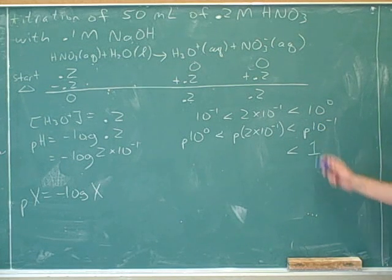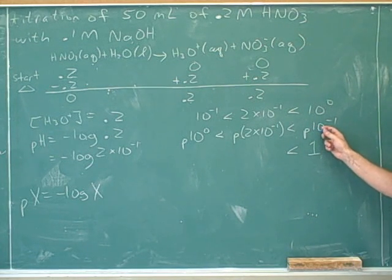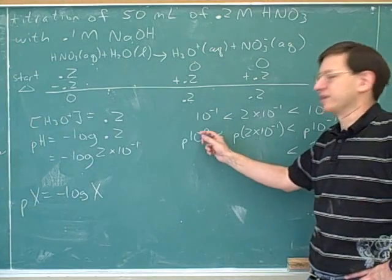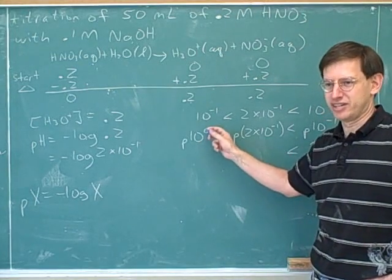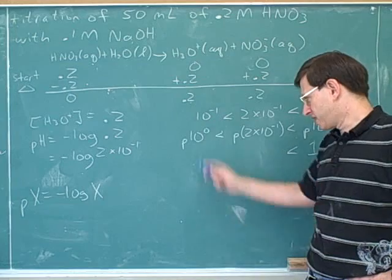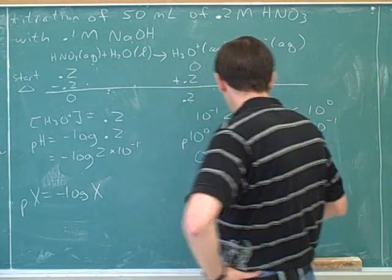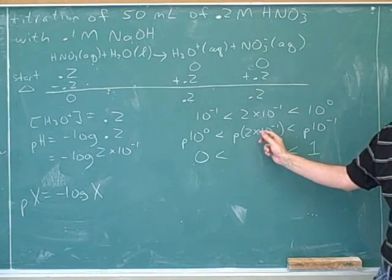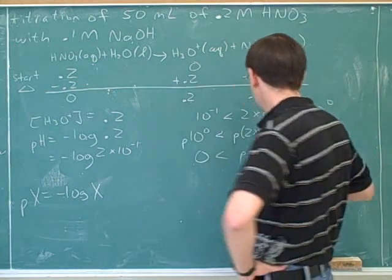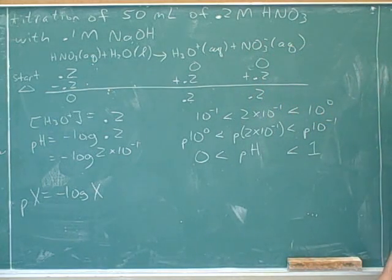You could probably do this just kind of by automatic instinct, because you've done so many of these problems. But what if you're given an unfamiliar concentration? Then you really need to understand what the rules are. Well, the exponent here is 0, and what's negative 0 is just 0. And this term here in the middle represents the pH. So we figured out that the pH is between 0 and 1. It's a very acidic solution. So we have a pH between 0 and 1 here.